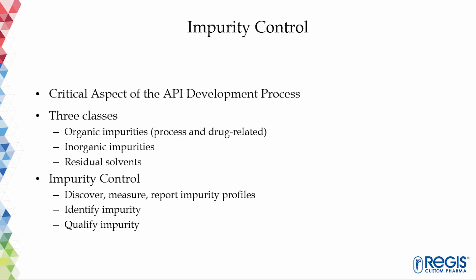Impurities are discovered, measured using qualified and validated analytical methods, and reported within the batch record. If an impurity level is higher than the identification level defined by ICH guidance Q3A, the structure of the impurity should be identified. If the impurity level is higher than the qualification level defined by Q3A, it should be qualified through biological safety studies.